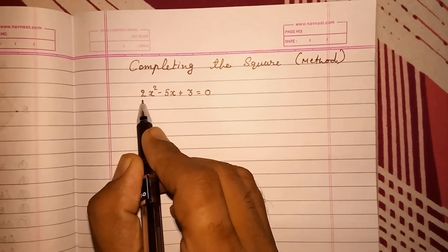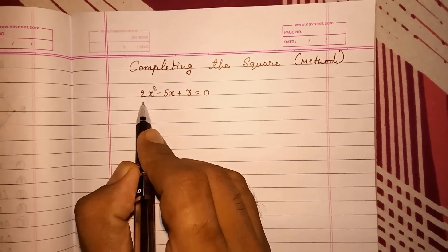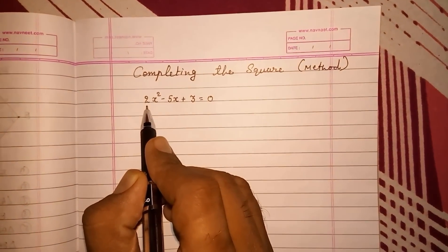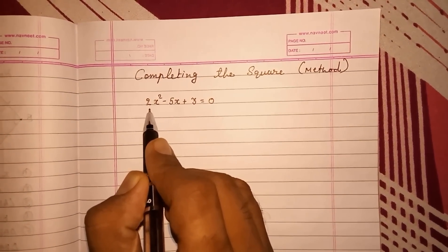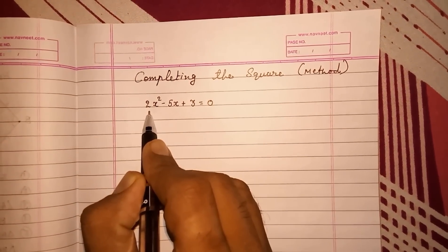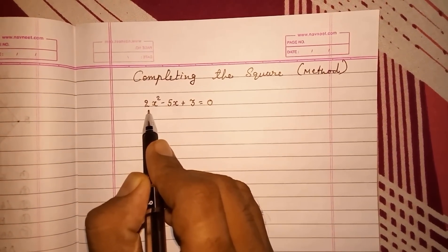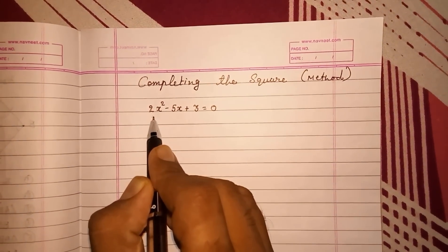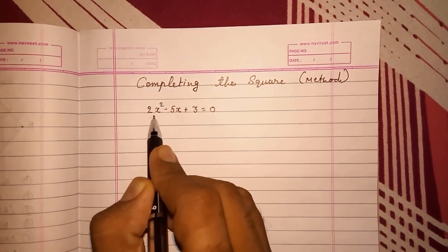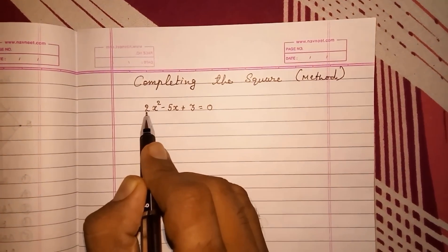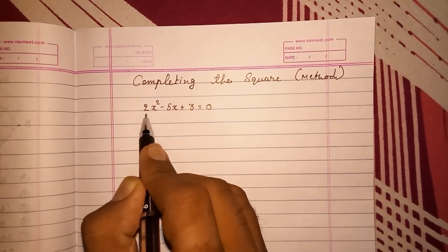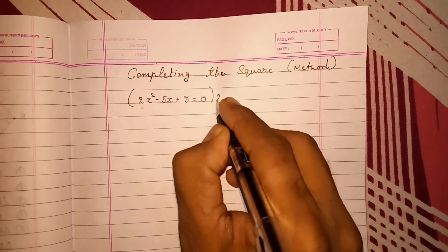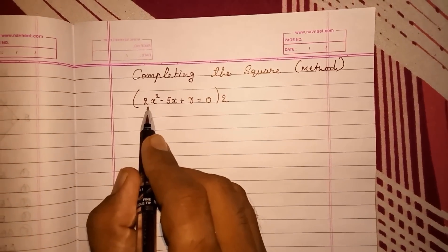When we start completing the square for any quadratic equation, first we have to look at the first term. If it is a perfect square, then we don't have to do anything. If it is not a perfect square, we have to convert it into a perfect square by multiplying or dividing with a number. So here it is 2. If I want to remove this 2 or make it a perfect square, I am going to multiply 2 with all the numbers. So it will become a perfect square.